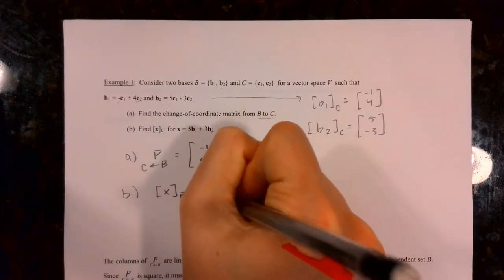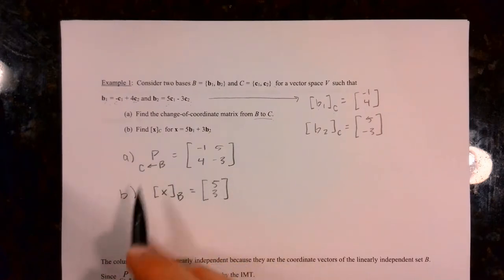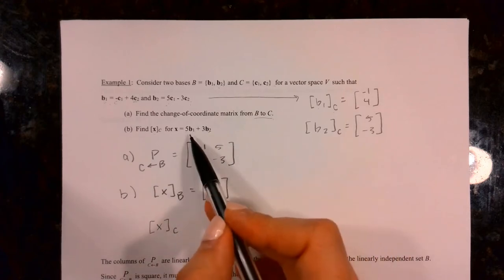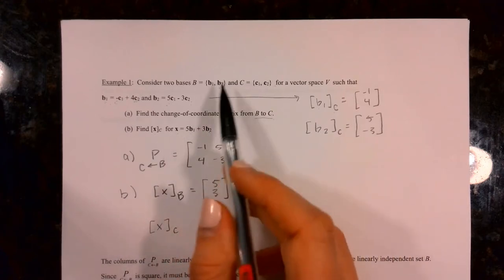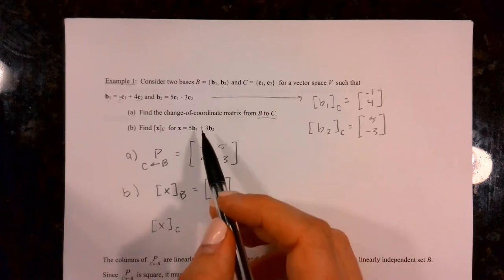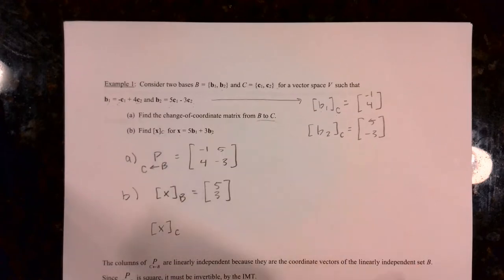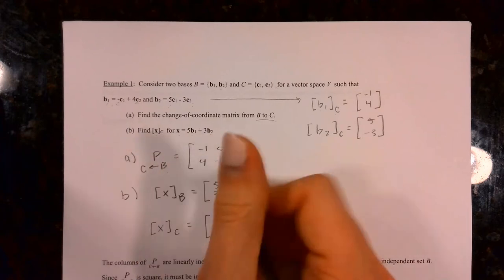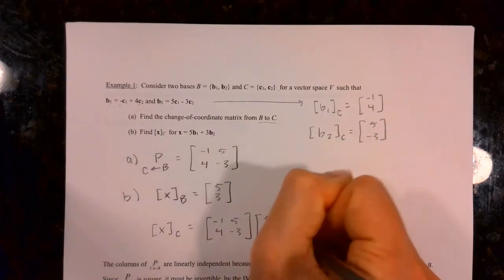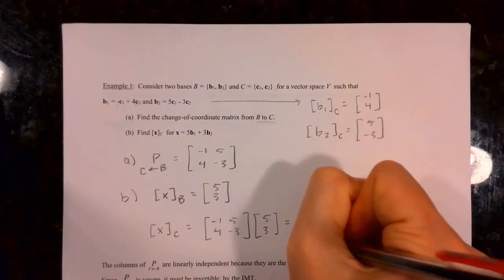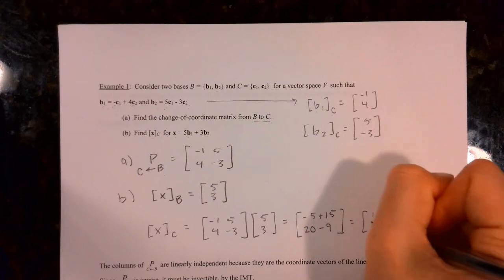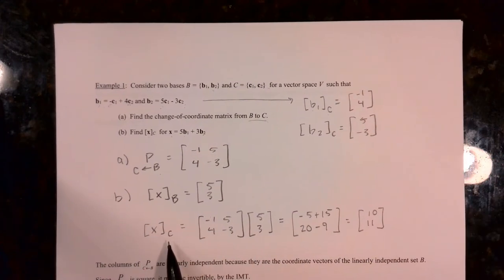Here's an example where they've already told us that B1 with respect to basis C is the vector (-1, 4), and B2 with respect to basis C is the vector (5, -3) — I got those from the coefficients. For part B, find x sub C if x in basis B is (5, 3). Multiplying the matrix [[-1,5],[4,-3]] by (5,3) gives (-5+15, 20-9) = (10, 11). That is the vector x in basis C.